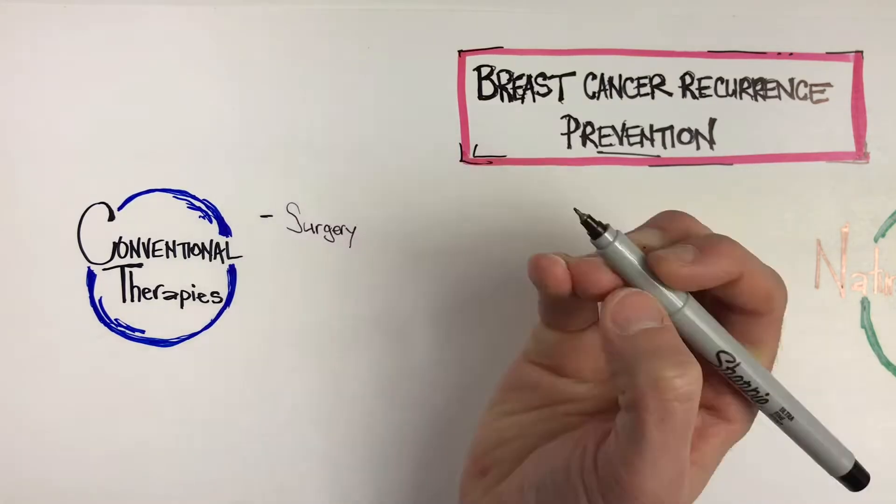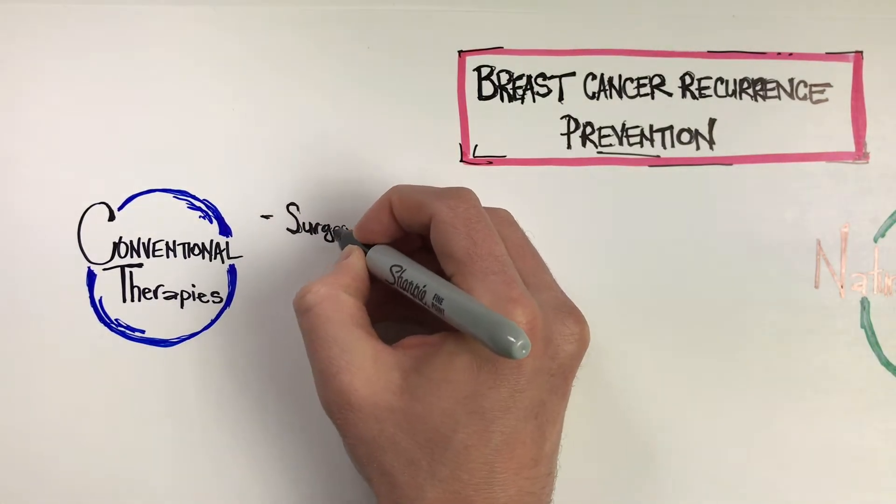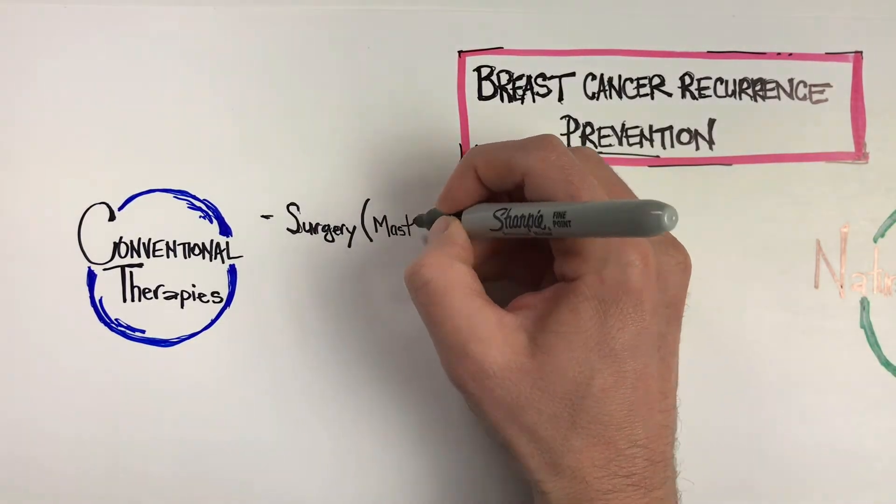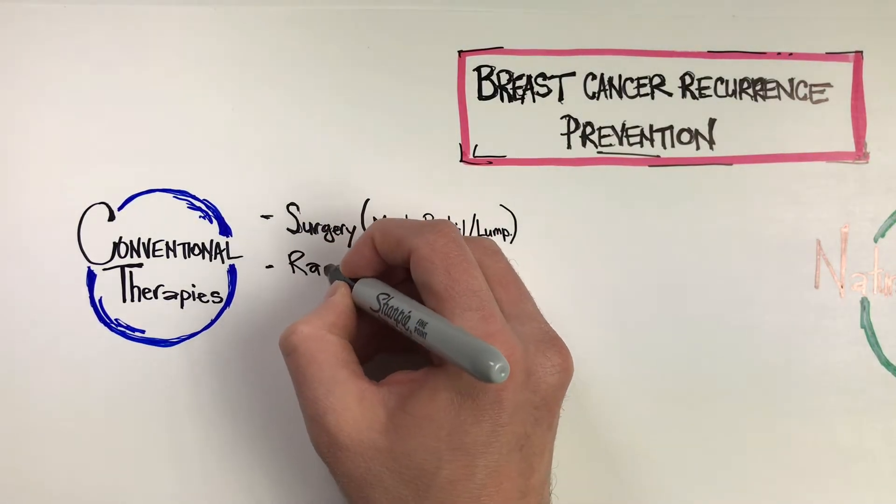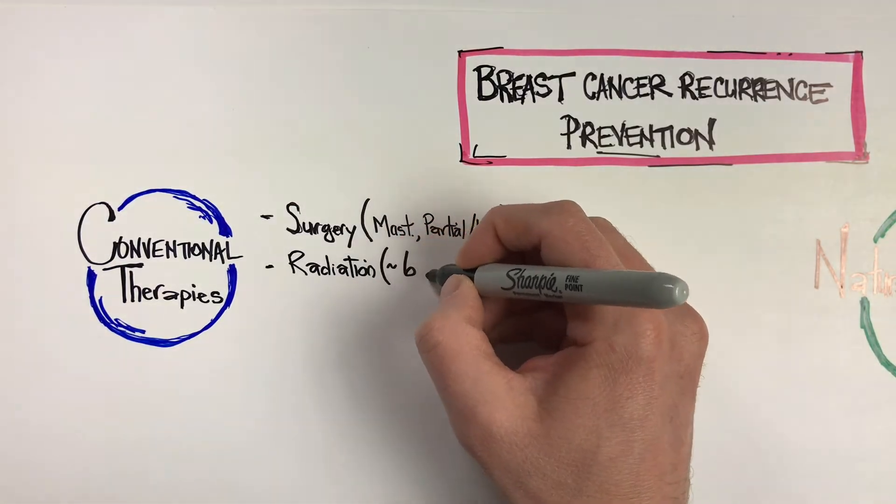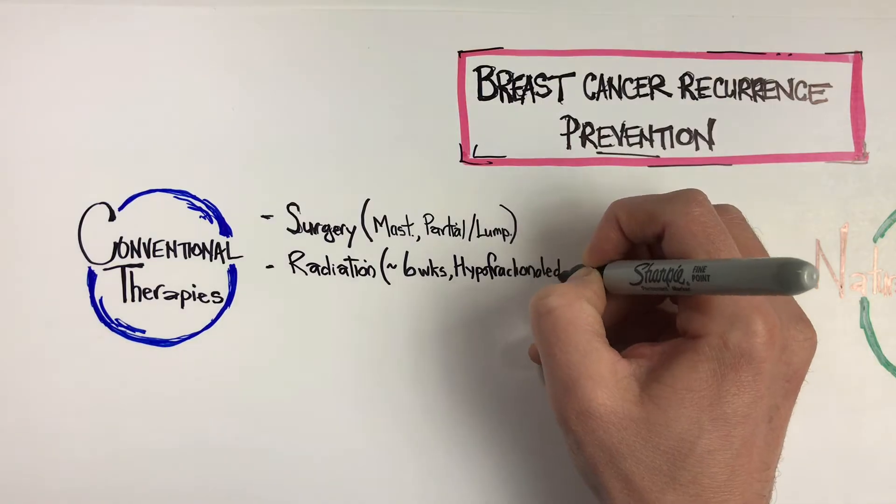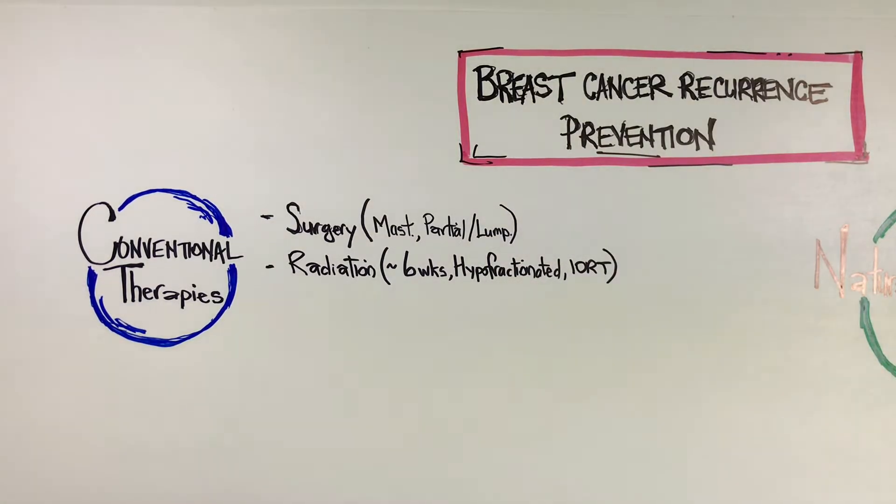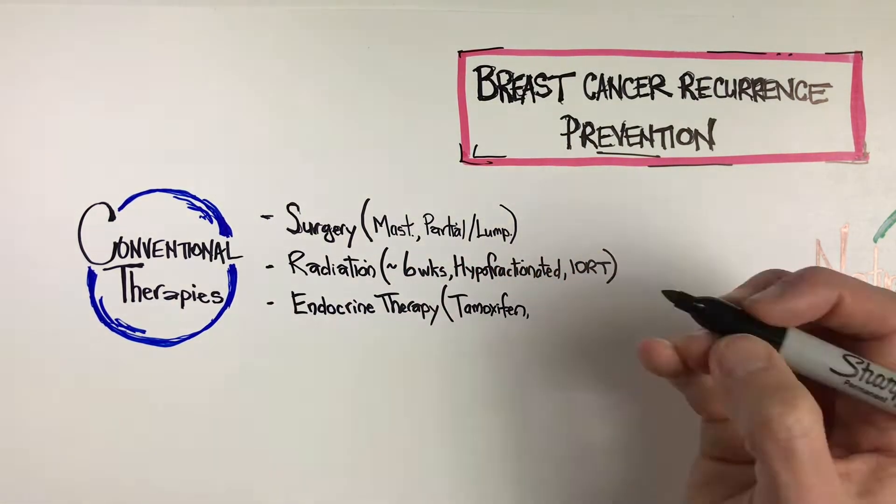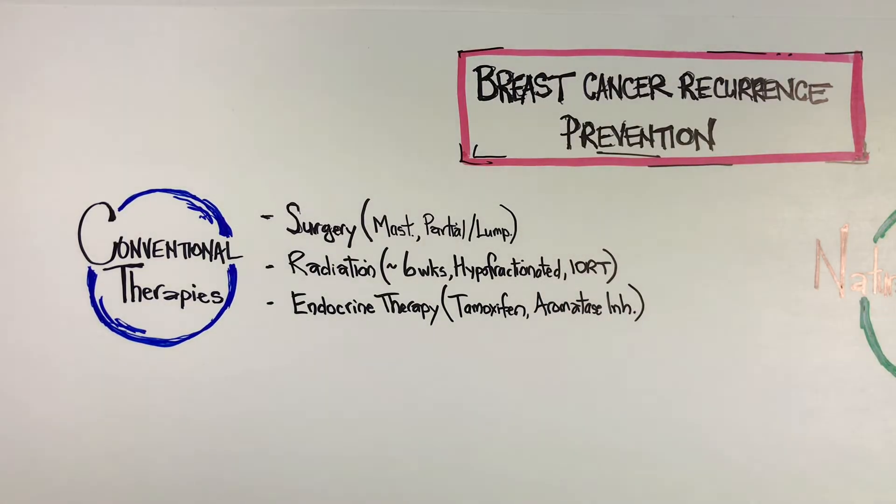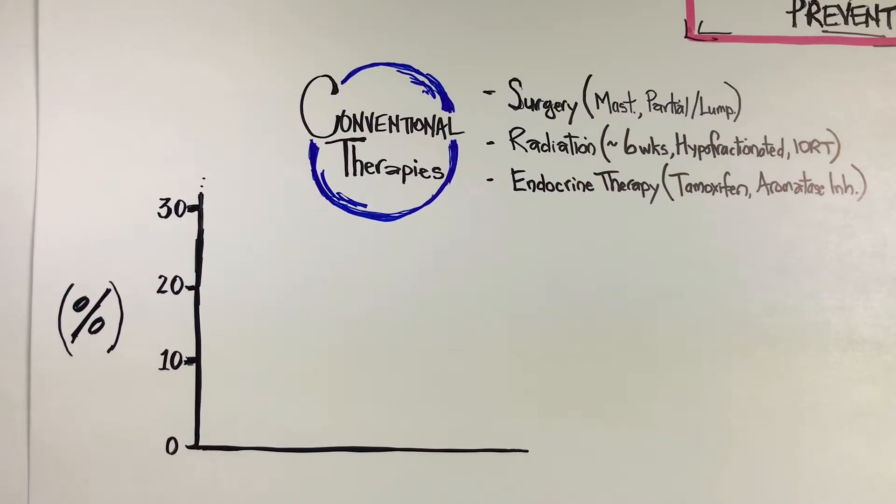Surgery is the primary centerpiece of therapy in early stages one, two, and three. That can be a mastectomy or partial mastectomy, also called a lumpectomy. After that, we have radiation as a treatment option, which can be over six weeks, shortened to hypofractionated therapy, or intraoperative radiation therapy. Endocrine therapy includes tamoxifen or aromatase inhibitors as anti-estrogen therapy in estrogen receptor positive cases. All of these therapies surround surgery with the goal of decreasing recurrence risk.